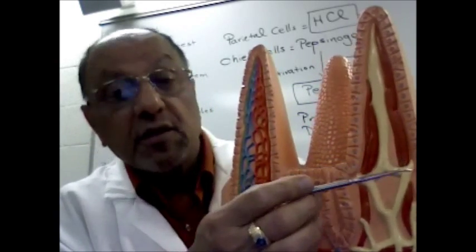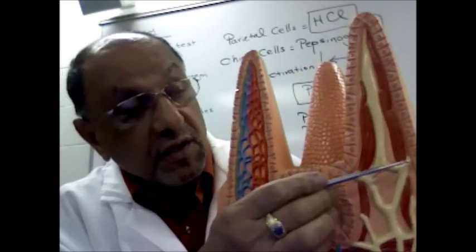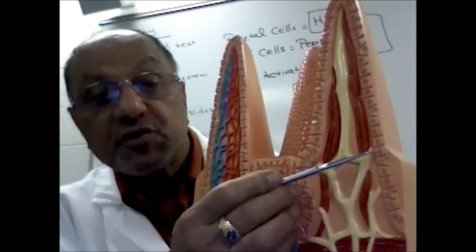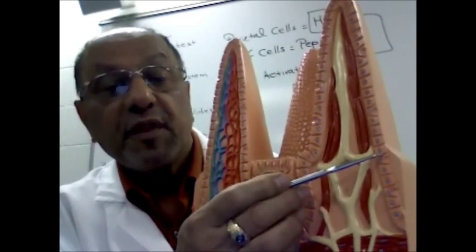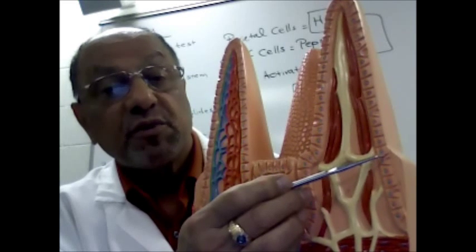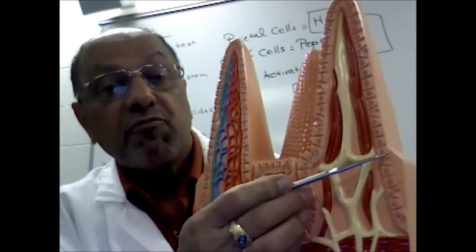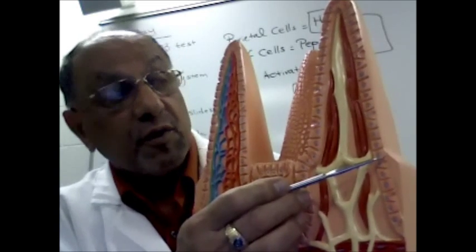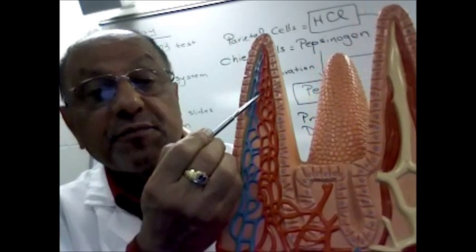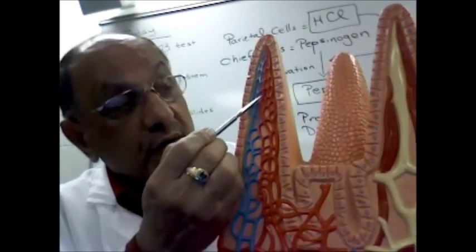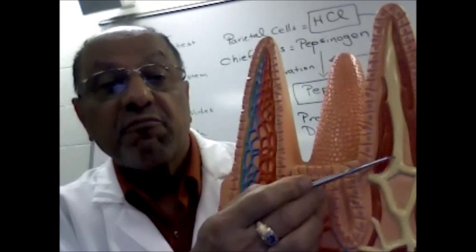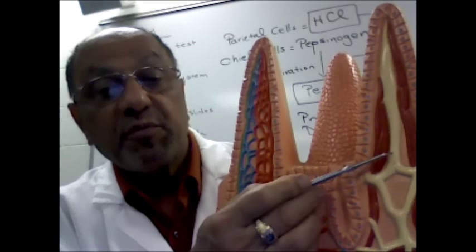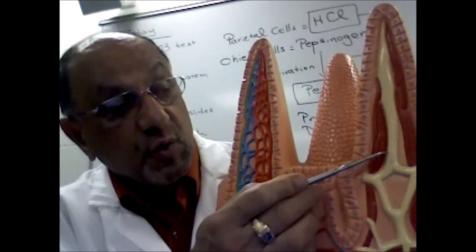Also shown in this model is the lining of the small intestine, which is made up of simple columnar cells. These are the cells that will absorb the nutrients from the food we eat, and they will transfer the nutrients either to the blood through the blood capillaries or to the lacteals, which are part of the lymphatic system.